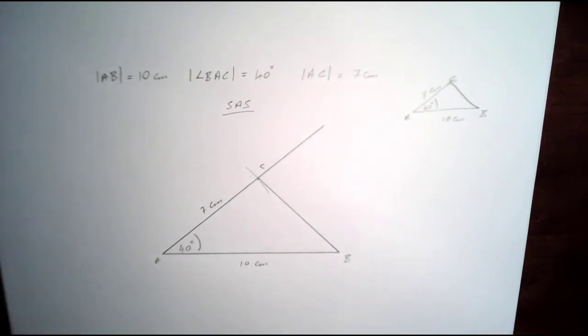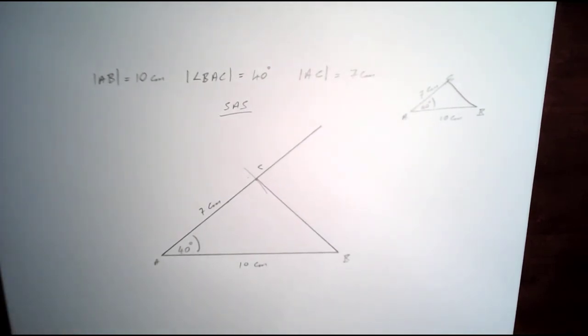And that's it. That's your construction of a triangle given two sides and an enclosed angle.